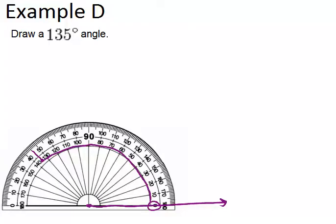If you have a ruler, use it to make sure your lines are straight. Now we can draw our second ray from 135 degrees back to our original endpoint. This angle right here is 135 degrees.